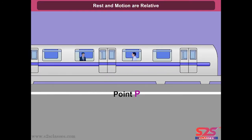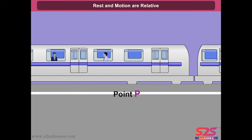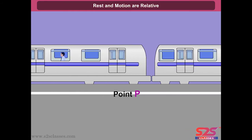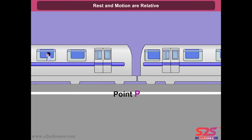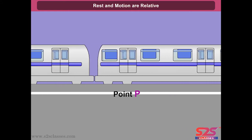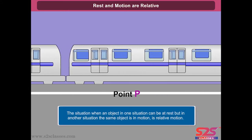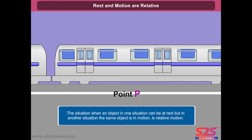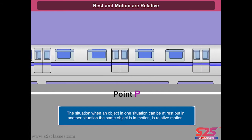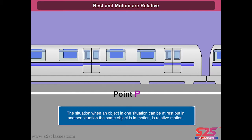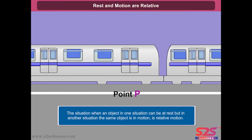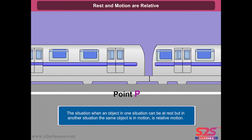A person sitting in a moving train is at rest with respect to his fellow passengers but is in motion with respect to the objects outside the train. This is the situation when an object in one situation can be at rest, but in another situation the same object is in motion. Hence, rest and motion are relative to each other.